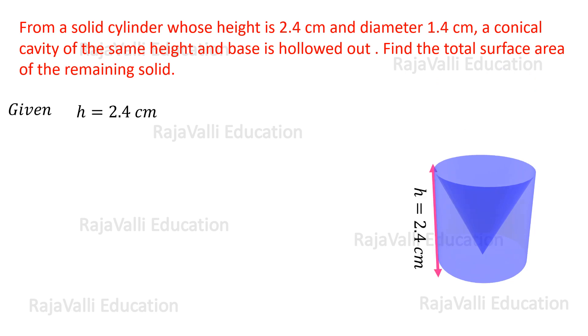We are given the height of the cylinder and diameter of the cylinder. So from the diameter, we are able to find out the radius of the cylinder by the formula d/2 = r = 1.4/2 = 0.7 cm.